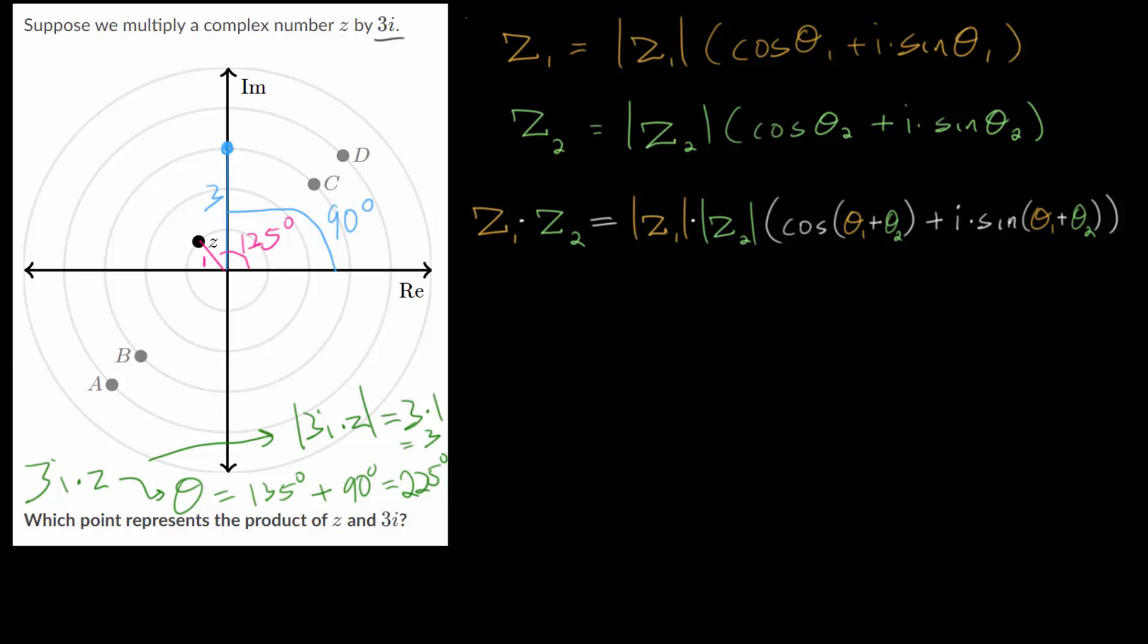So it will be on this third ring and it will have an angle of 225. An angle of 180 would bring us all the way to the negative real number axis and we need to go another 45 degrees, so roughly about there. This would be a 225 degree angle. We need to go 3 rungs out so that its magnitude is 3.